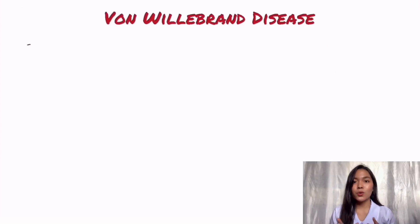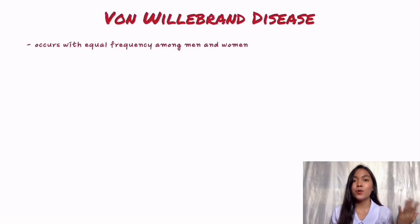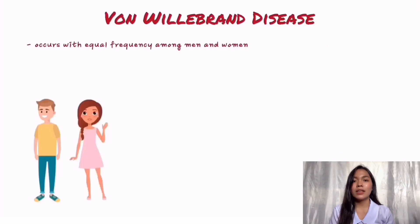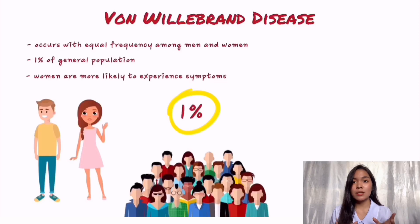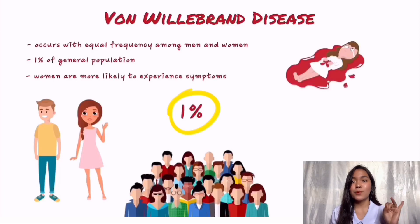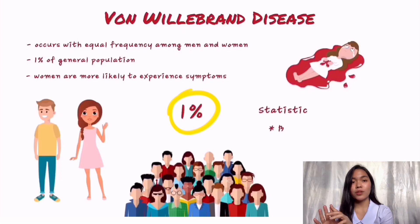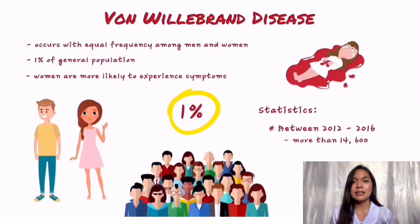Von Willebrand disease occurs with equal frequency among men and women, affecting up to 1% of the general population. However, women are more likely to experience symptoms of von Willebrand disease because of the increased bleeding it causes during menstrual periods, pregnancy, and after childbirth. Between 2012 and 2016, there were more than 14,600 reported cases of von Willebrand disease, and about two-thirds of those were women and girls.